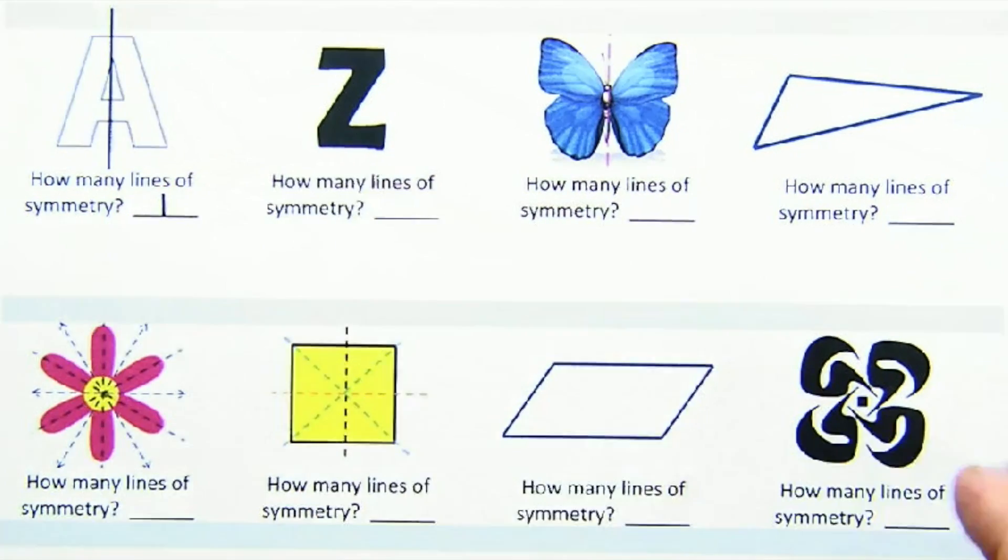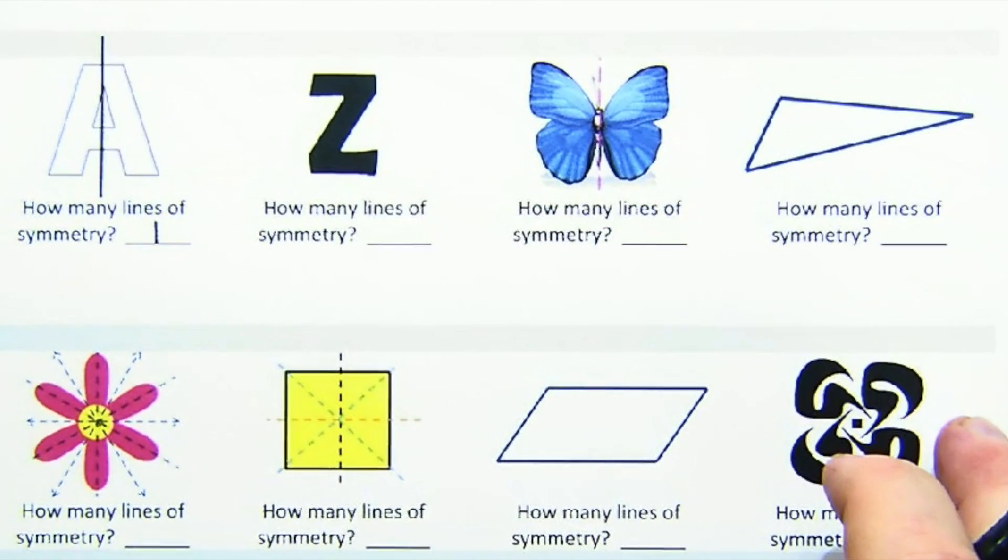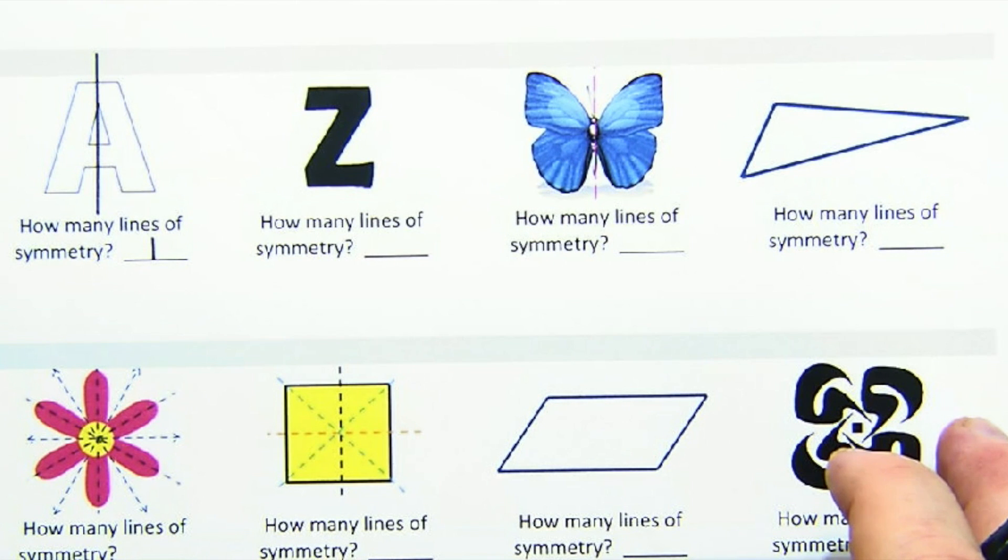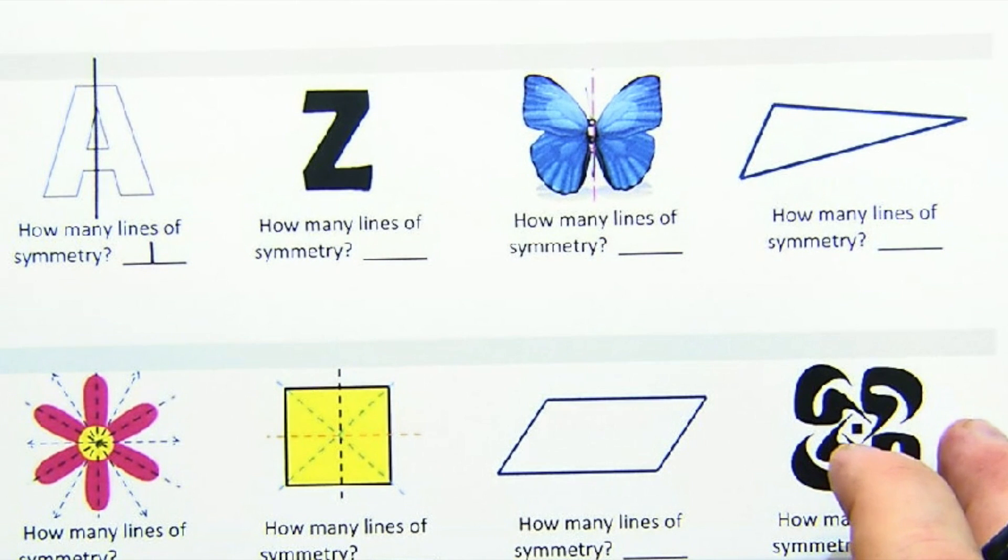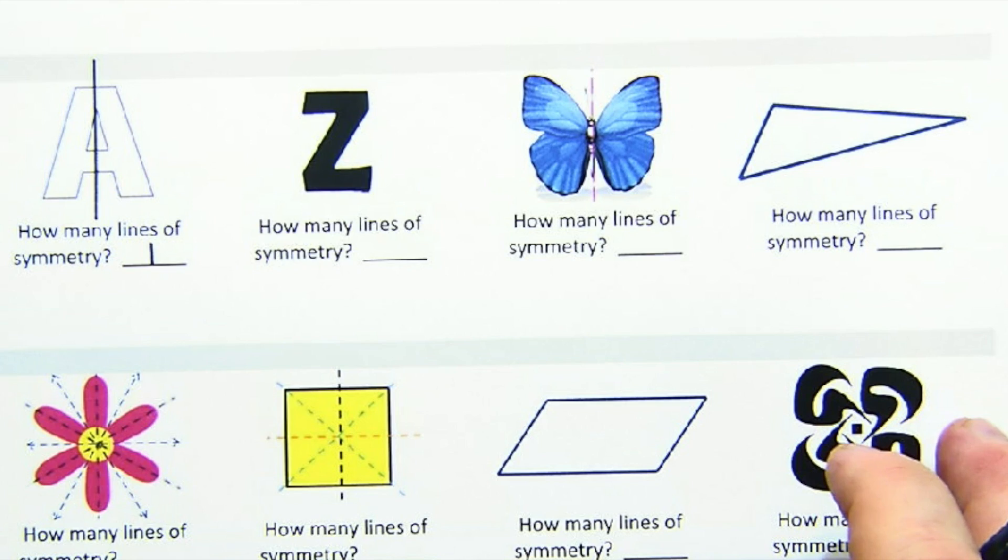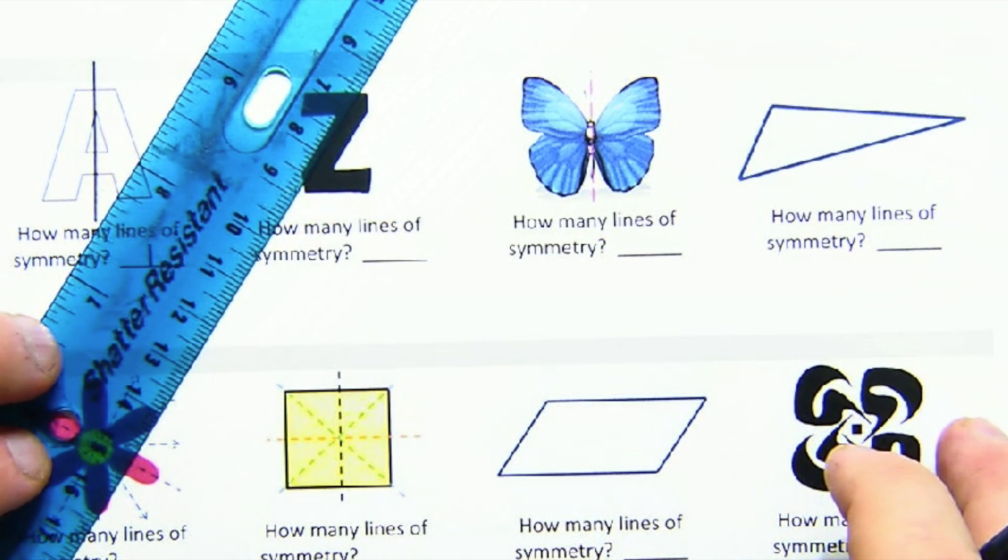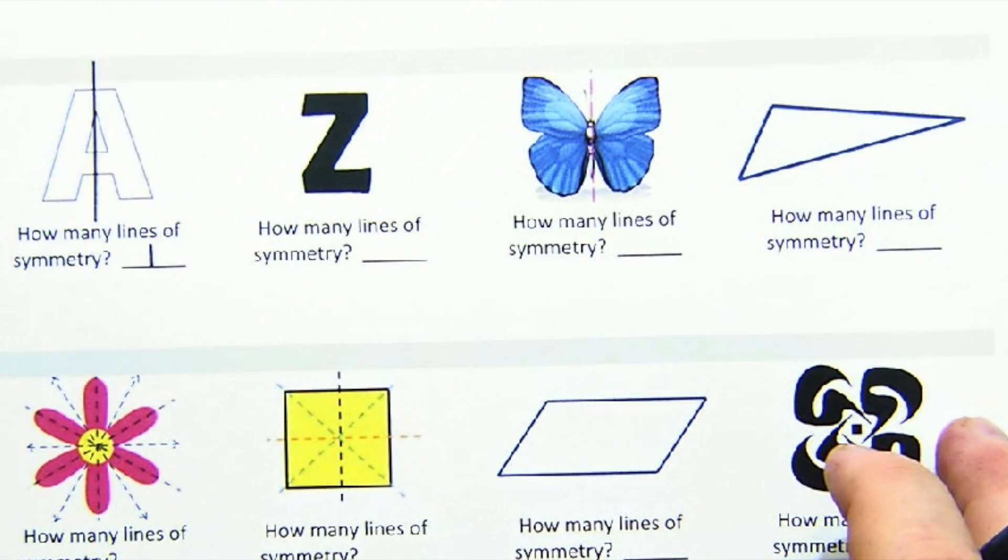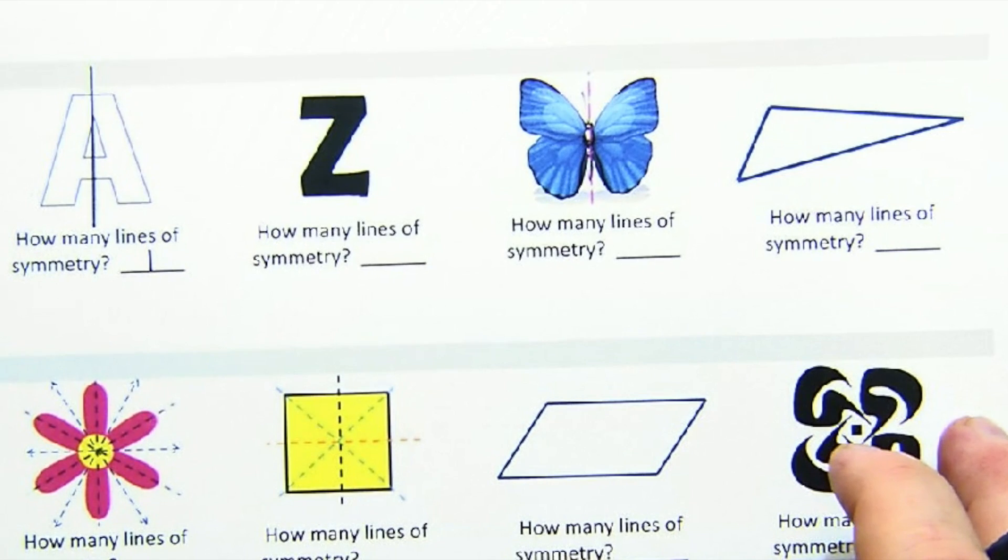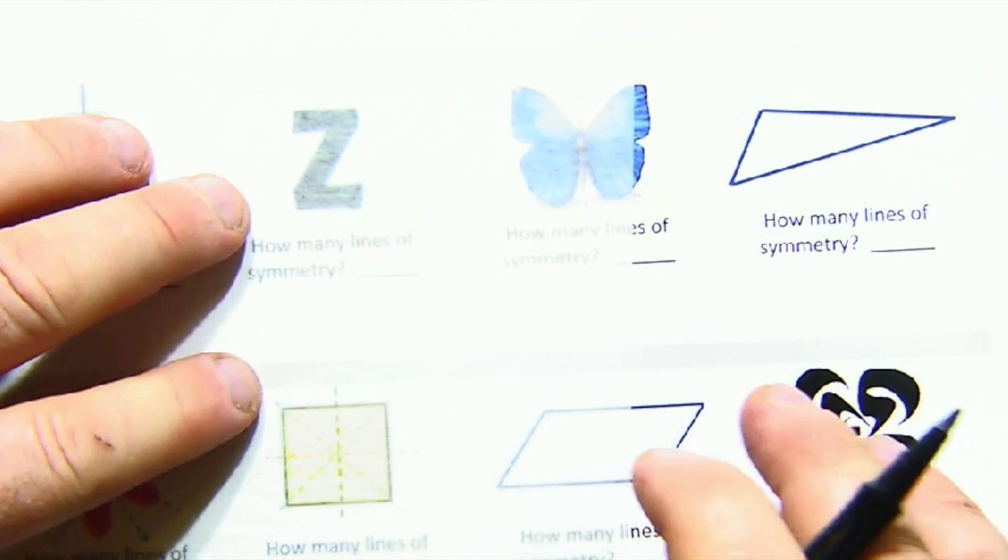Z is a classic error line symmetry. I think some students think maybe going down the diagonal here would work, and maybe that's worth testing out. Let's take a look here.